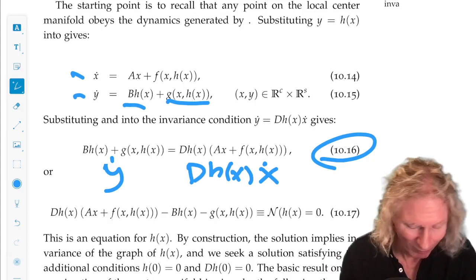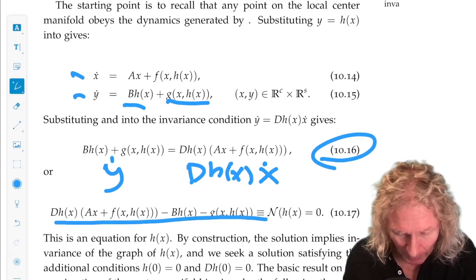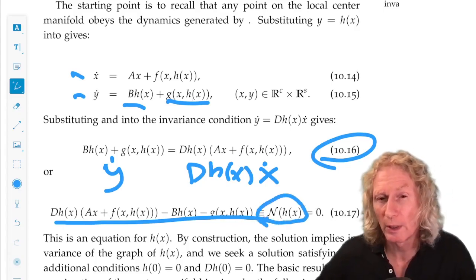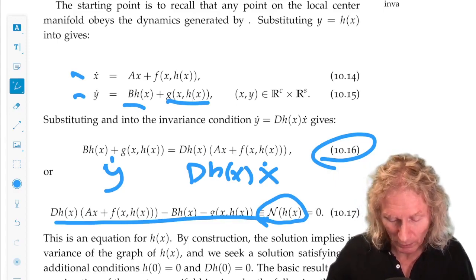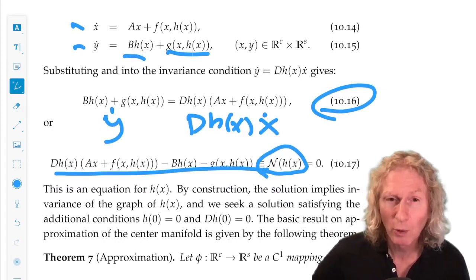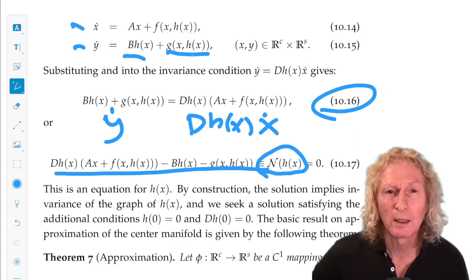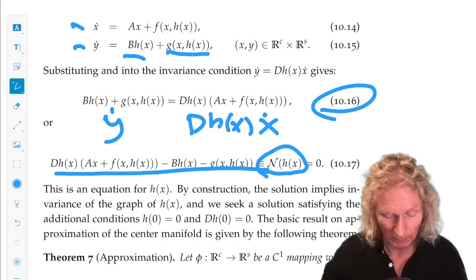I multiply them out, I subtract them off from each other, and I call that script N of h(x), just as a shorthand notation for this partial differential equation for h(x), and set that equal to 0. So, that's an equation for the center manifold that embodies the notion of invariance and the dynamics of the equation.